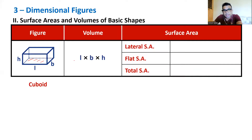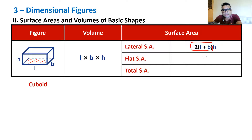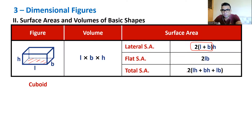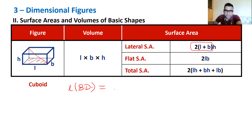For a cuboid with dimensions l, b, h: volume = l × b × h. Lateral surface area = perimeter of base × height = 2(l + b) × h. Flat surface area = 2lb. Total surface area = 2(lb + bh + lh). The body diagonal = √(l² + b² + h²). If all three dimensions are equal (i.e., a cube with l = b = h = x), this reduces to √(3x²) = x√3, consistent with what we found.